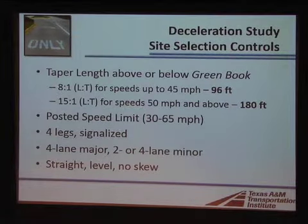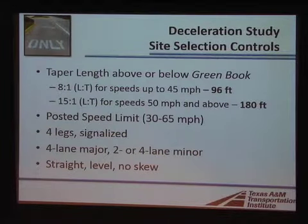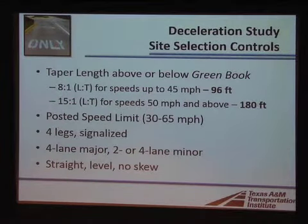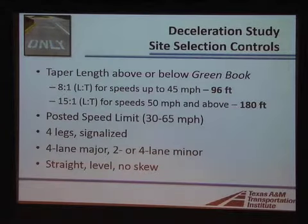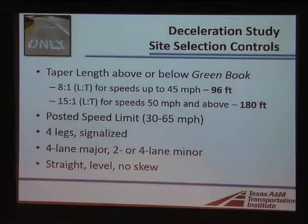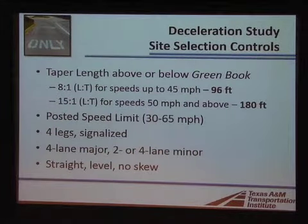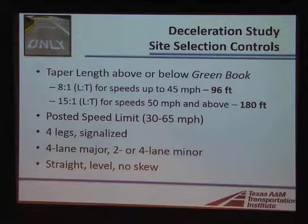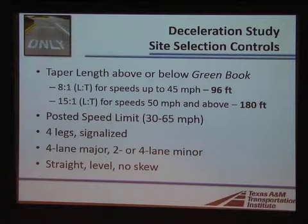We collected a lot of data. In setting up our study sites, we used taper length as our benchmark. The Green Book gives two taper rates: the 8-to-1 rate for speeds up to 45 miles an hour, and 15-to-1 for speeds 50 and above. For a 12-foot lane, those yield 96-foot and 180-foot lengths respectively. We looked at speed limits ranging from 30 to 65 miles an hour. All sites were four-leg signalized intersections with four lanes on the major road, a variety of two to four lanes on the minor road, and were roughly straight, level, and unskewed to minimize effects on deceleration behavior.